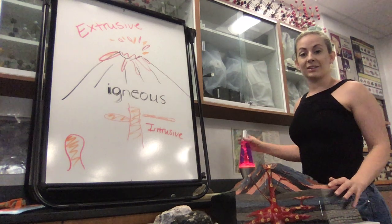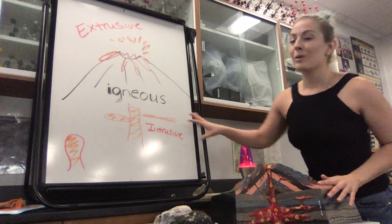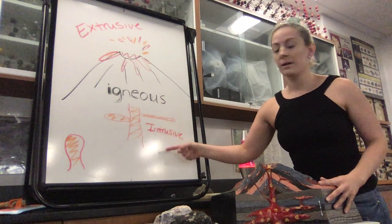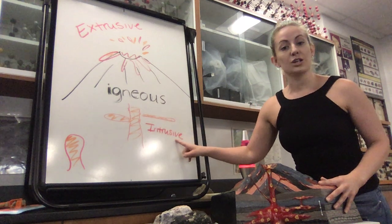When you have molten material, I have my lava lamp here, when it's under the earth's surface, it's termed magma. Cooling magma would form an intrusive rock.